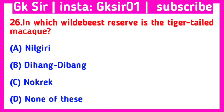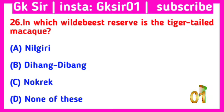Question number 26. In which wildlife reserve is the lion-tailed macaque found? Option A: Naigarhole, Option B: Dibang Dibung, Option C: Nokrek, Option D: none of these. The correct answer is Option A: Naigarhole.